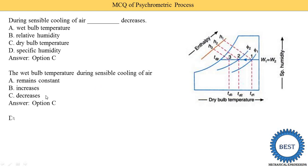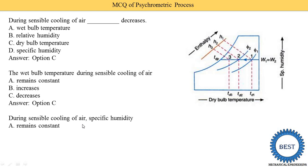During sensible cooling of air, specific humidity remains constant, increases, or decreases? In the graph we see the specific humidity axis — at the inlet and outlet, specific humidity remains constant. So option A is the correct answer.